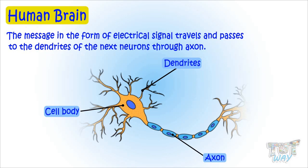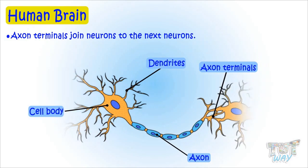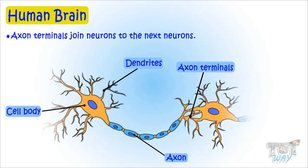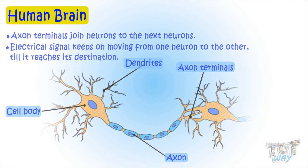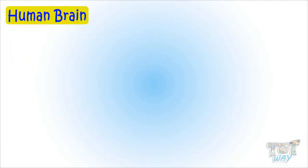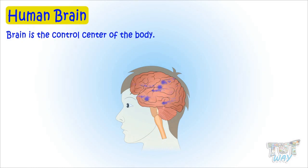This is the axon, where the message in the form of electrical signals travels and passes to the dendrites of the next neurons. These are axon terminals that join with the next neurons. The electrical signal keeps on moving from one neuron to the other until it reaches its destination.